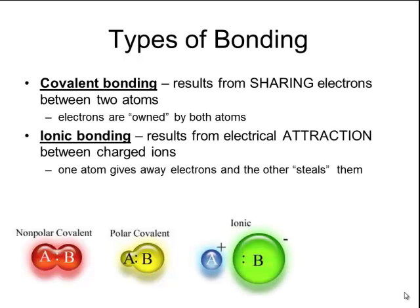A second kind of bonding is called ionic bonding. Ionic bonding results from an electrical attraction between charged ions. One of the atoms is going to give away electrons and become a cation, whereas the other atom is going to gain or steal the electrons and become an anion. Because cations are positively charged and anions are negatively charged, those opposite charges attract each other to form an ionic bond.